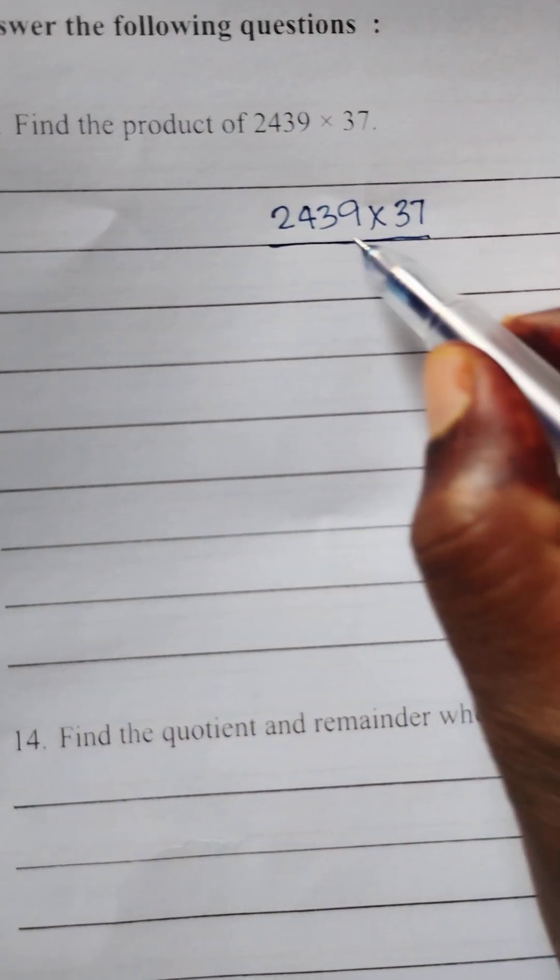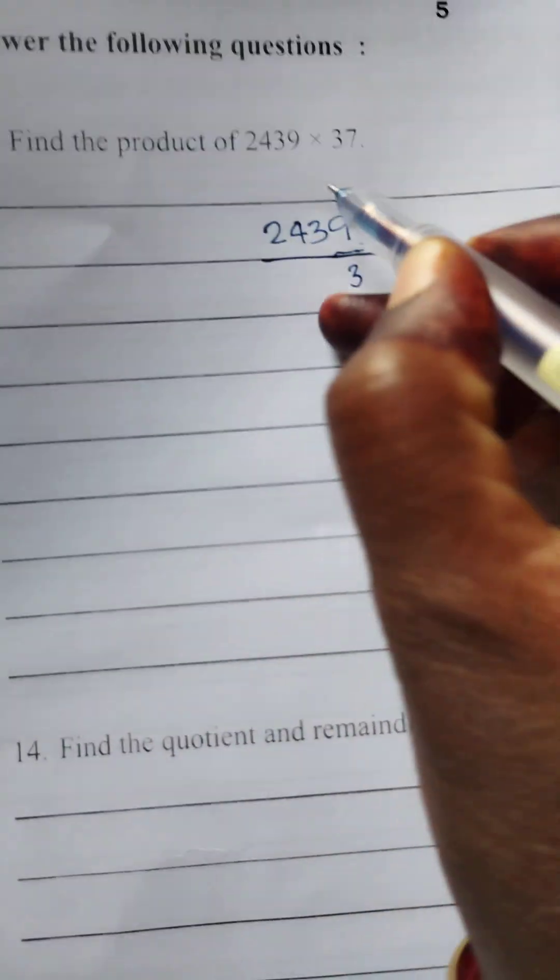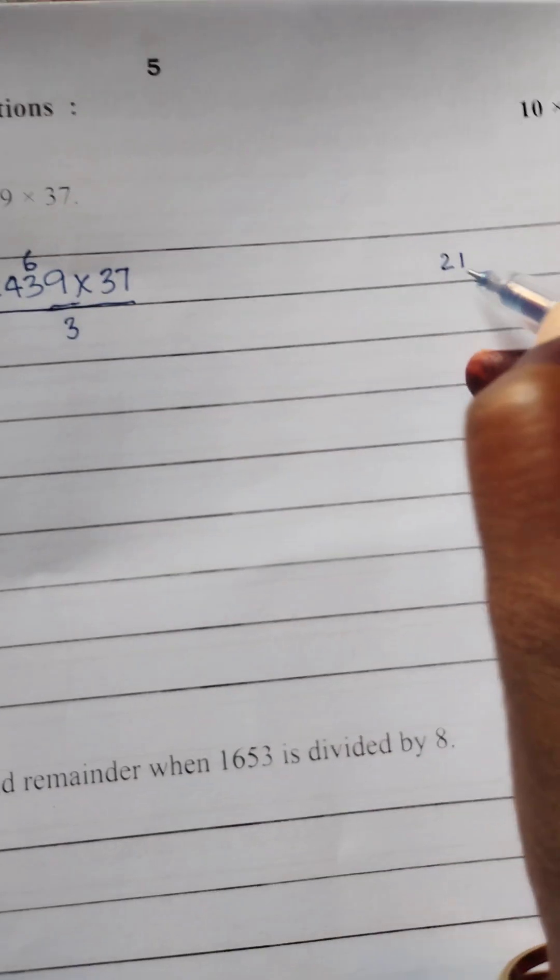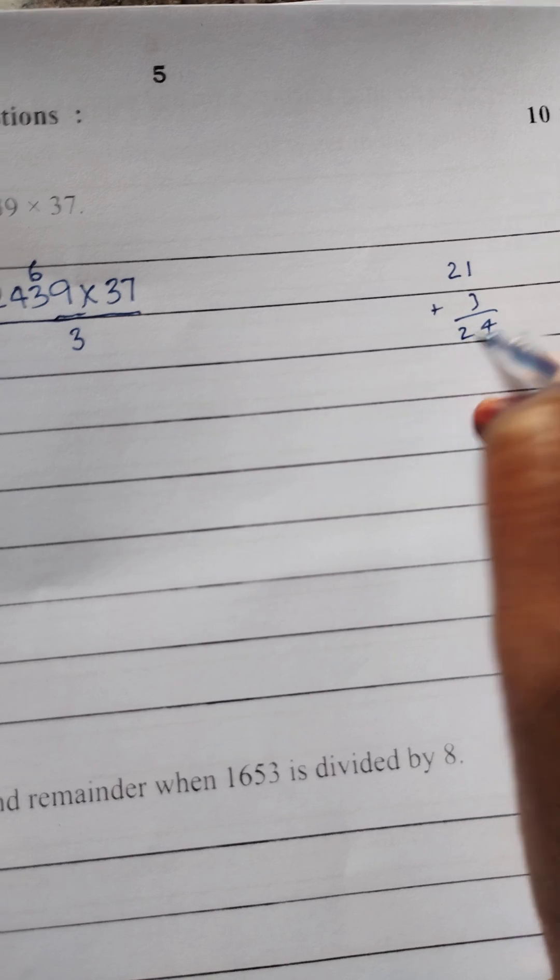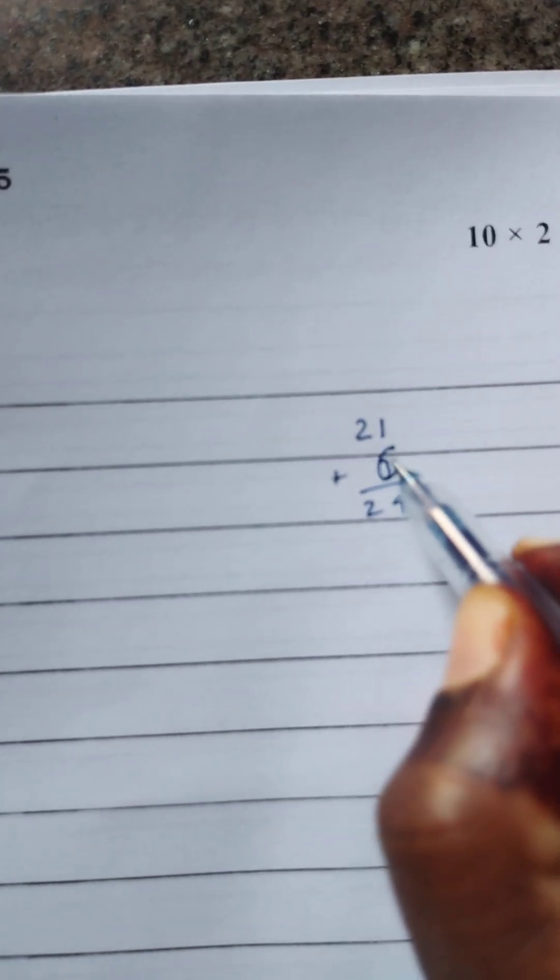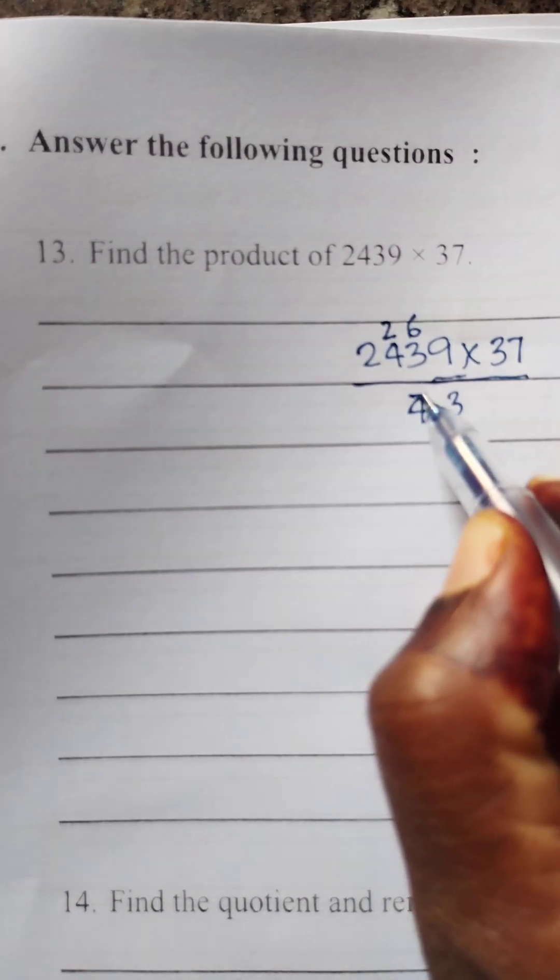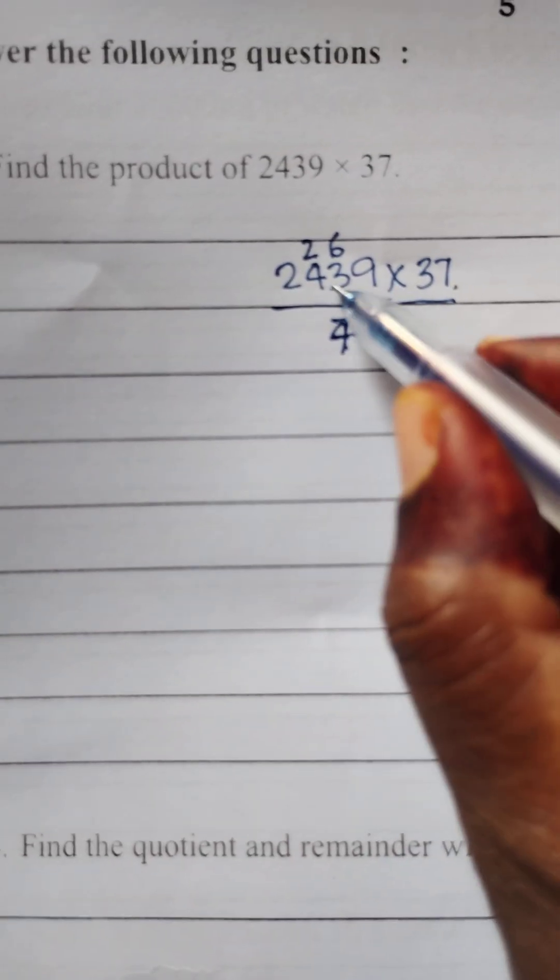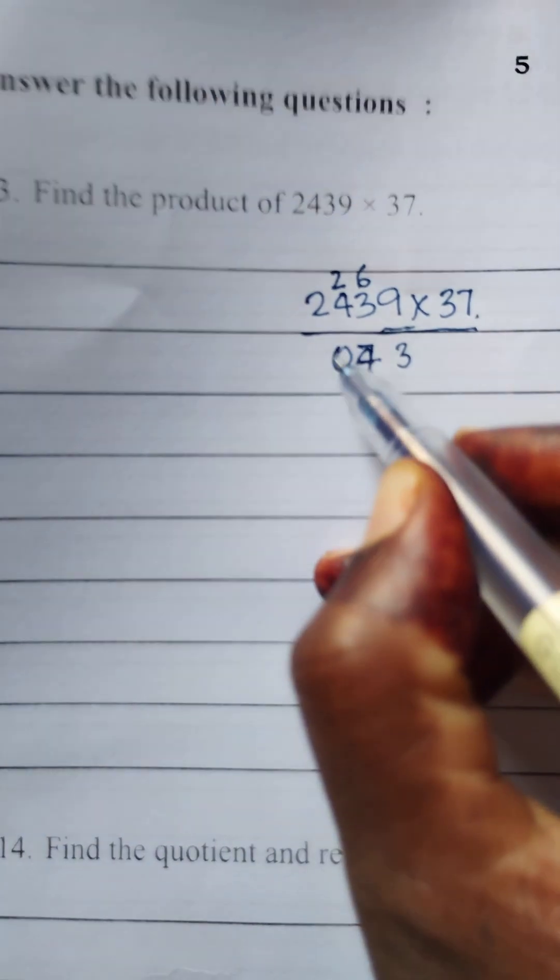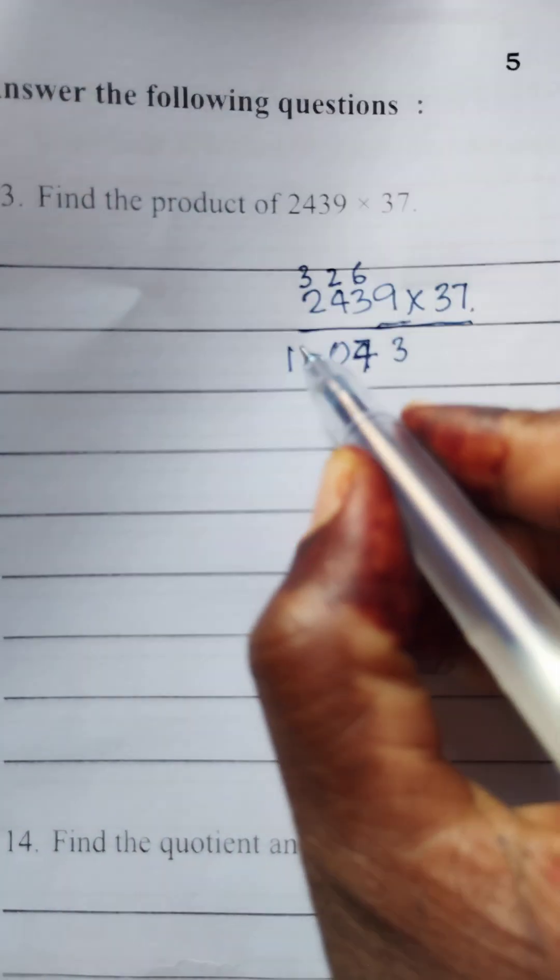So here now 7 nines are 63. 3 you want to write here, 6 goes to carry. 7 threes are 21. 21 plus 3 you can add like this. 21 plus 3 means 24. You can write here 4. 2 goes to... Sorry 3 here you want to add. 21 plus 6 is 27. You can write here 7, 2 goes to carry. Now 7 fours are 28. 28 plus 2 is 30. 3 goes to carry. Now 7 twos are 14. 14 plus 3 is 17.